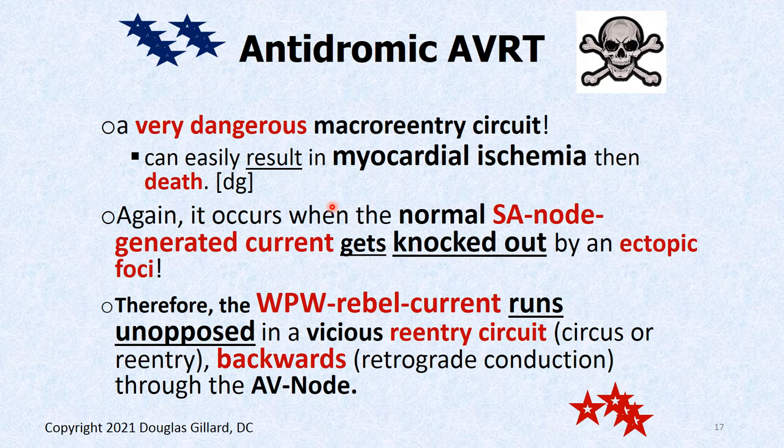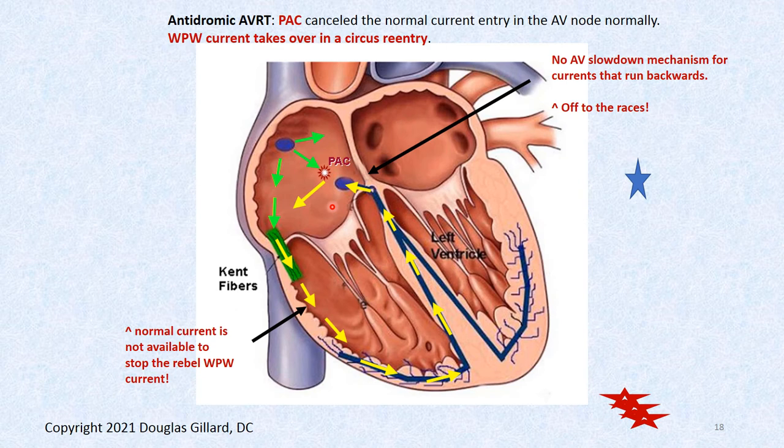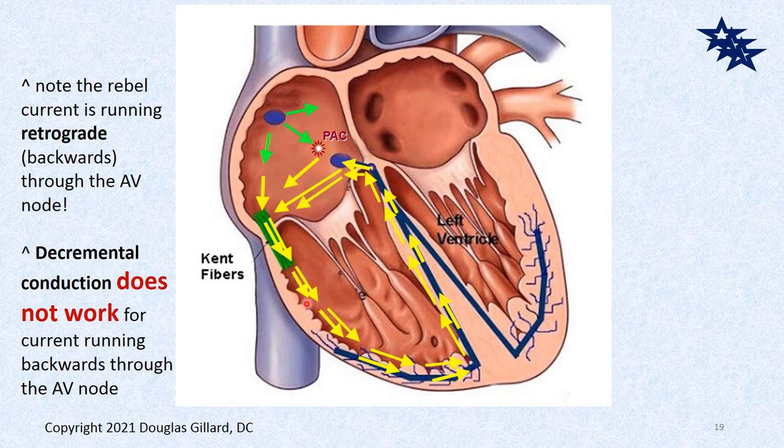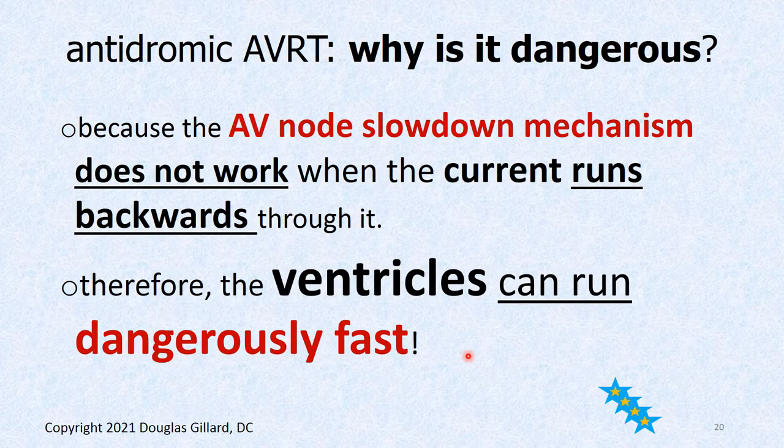The WPW current runs retrograde through the AV node, splits — half knocks out the SA node, the other half goes back down the Kent fibers — creating a racetrack. Running retrograde through the AV node means there's nothing to slow the current down. Heart rates can reach 300 beats per minute. If your heart runs that fast, not much blood is coming out, not much blood is getting back to supply the heart muscle, and a vicious cycle begins where the heart starts to die.